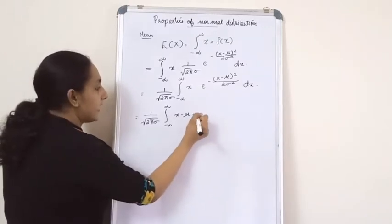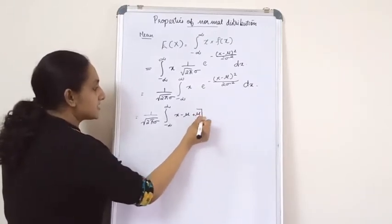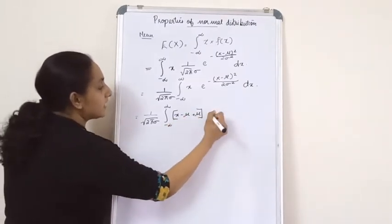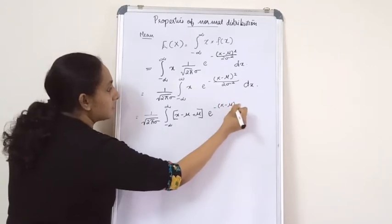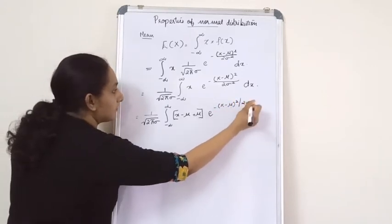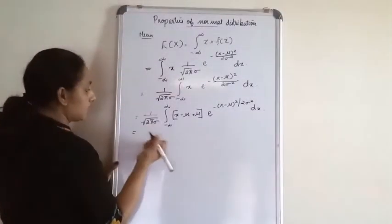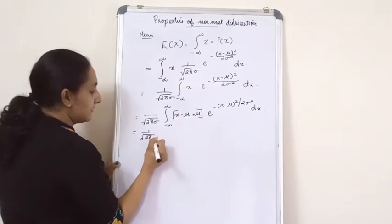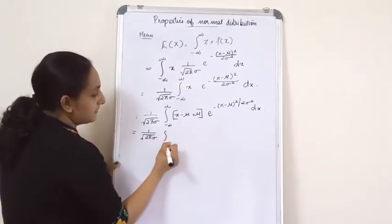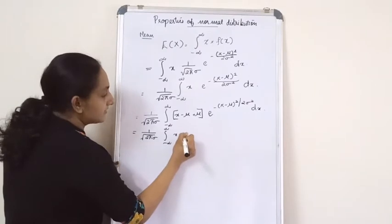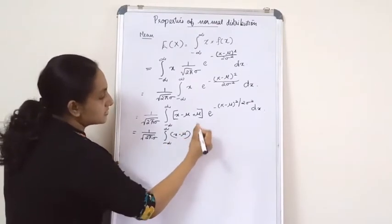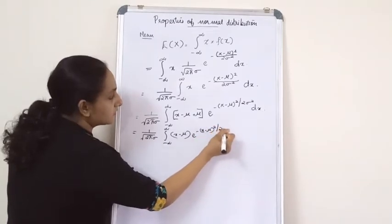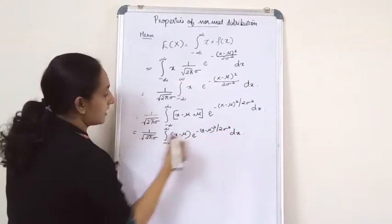Subtract mu and add mu to x so that there is no change; the effect is the same. Into e raised to minus x minus mu the whole square divided by 2 sigma square dx. This is equal to 1 by root 2 pi sigma, integral minus infinity to infinity, x minus mu into e raised to minus x minus mu the whole square by 2 sigma square dx.